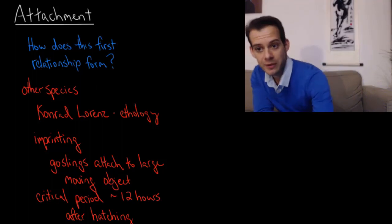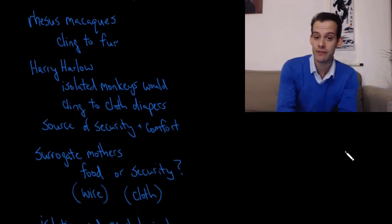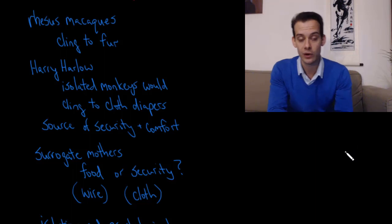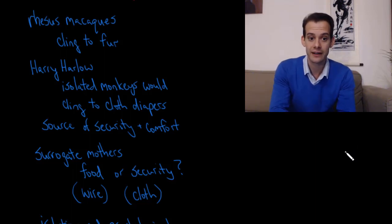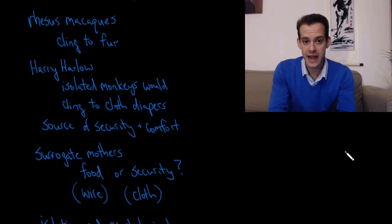Now, of course, humans don't imprint in this way, so we might look to closer relatives to understand how we form an attachment. This brings us to the work of Harry Harlow, who looked at rhesus macaque monkeys. In these rhesus macaque monkeys, we see that the very young monkeys will cling to the fur of their mother in a sort of literal type of attachment, and this is part of how they learn this relationship with the mother.